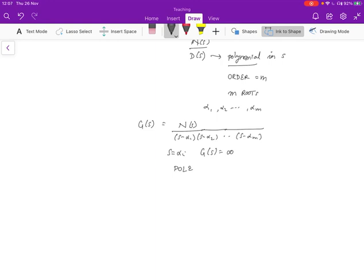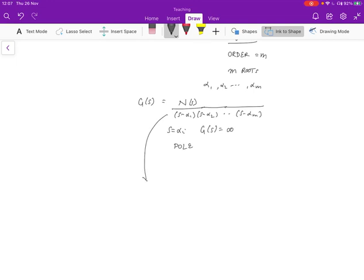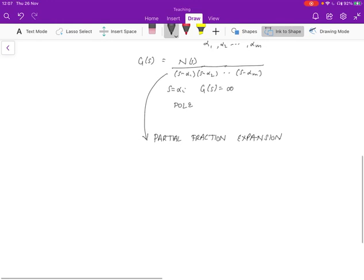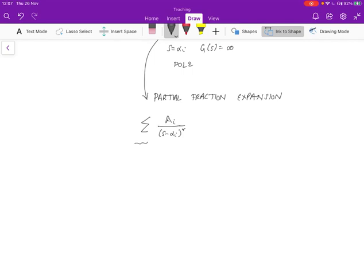If we have something in this form, then this can be rewritten using what's called the partial fraction expansion. The partial fraction expansion allows us to write this function n of s over the denominator in the form of some set of terms, a_i over s minus alpha i to the r, where r means that the i-th root is repeated r times. Because it's a summation and the Laplace transform is linear, we can take each of these terms separately and compute the inverse Laplace transform of each term.